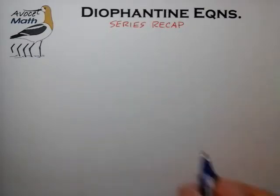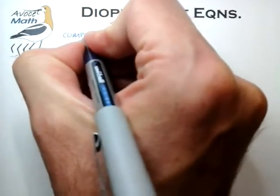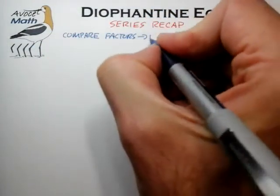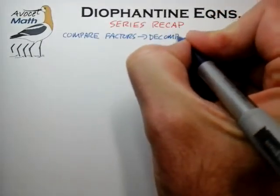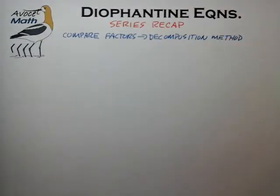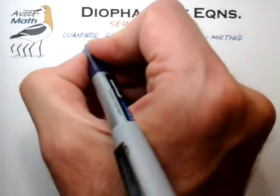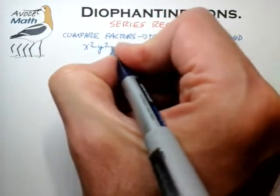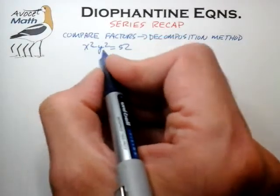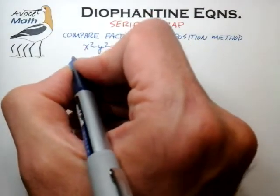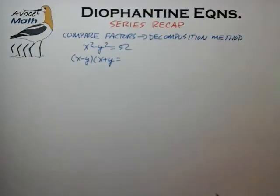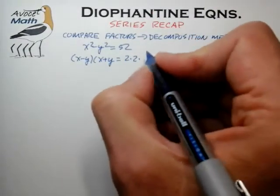Our first and foremost and favorite method, of course, is the method of compare factors. This method is sometimes referred to as the decomposition method. A typical example of this method is an equation of the form, for example, x squared minus y squared equals 52. We want to take advantage of any factoring opportunity — we certainly see an opportunity to factor x squared minus y squared into x minus y times x plus y. We decompose the number 52 into its constituent prime factors: 2 times 2 times 13.